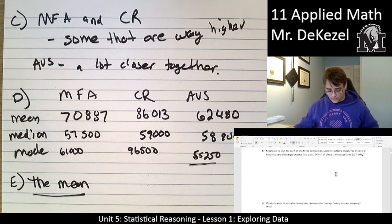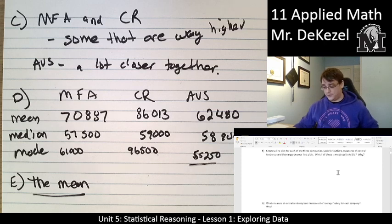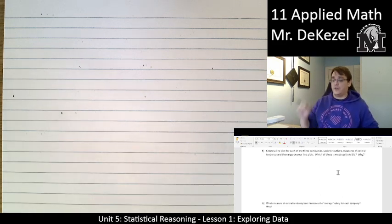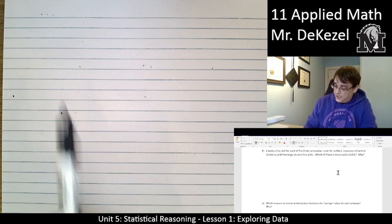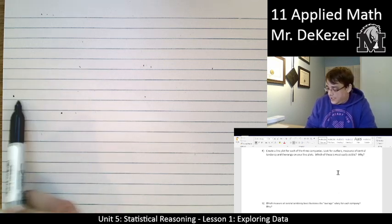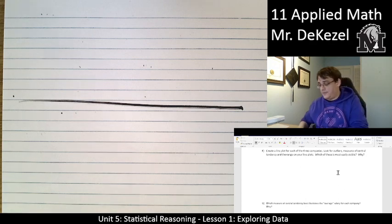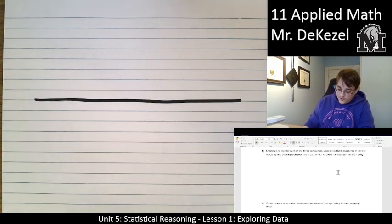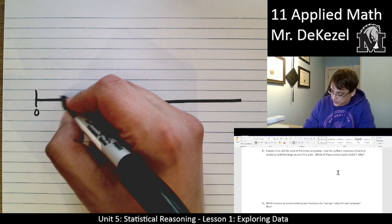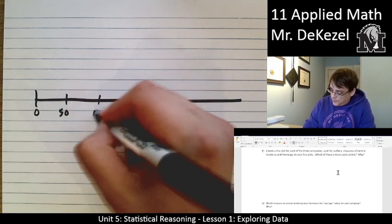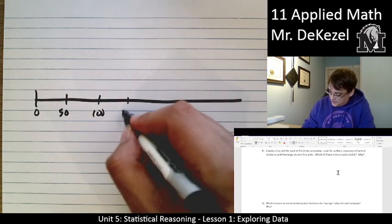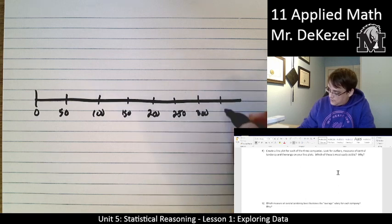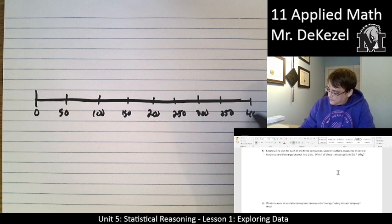F. We are going to create a line plot. I'm going to attempt to do it quickly. Here we go. We are going to look for outliers. And we are going to not do it for three, we are going to just do it for two. I got a line here. That is not a straight line. Let me start again. That is better. We are going to start at 0 because you can't make less than 0. Or I really hope you can't. And we are going to go up by 50s. Let's see if I can get this correct. 200, 250, 300, and then we have 350, and we call this end 400.